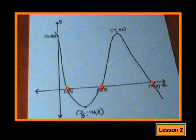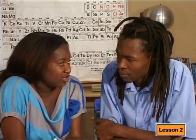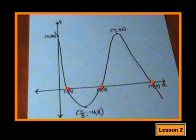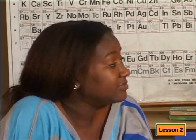As you know, we can represent all equations as graphs, and a cubic function is no different. The graph of a cubic function would look something like this. And just as in quadratic equations, when we solve for x in the function, we have to find the x-intercepts or the roots of the function. If we take a close look at the graph of the cubic function, you will see that in this case, there are three intercepts with the x-axis.